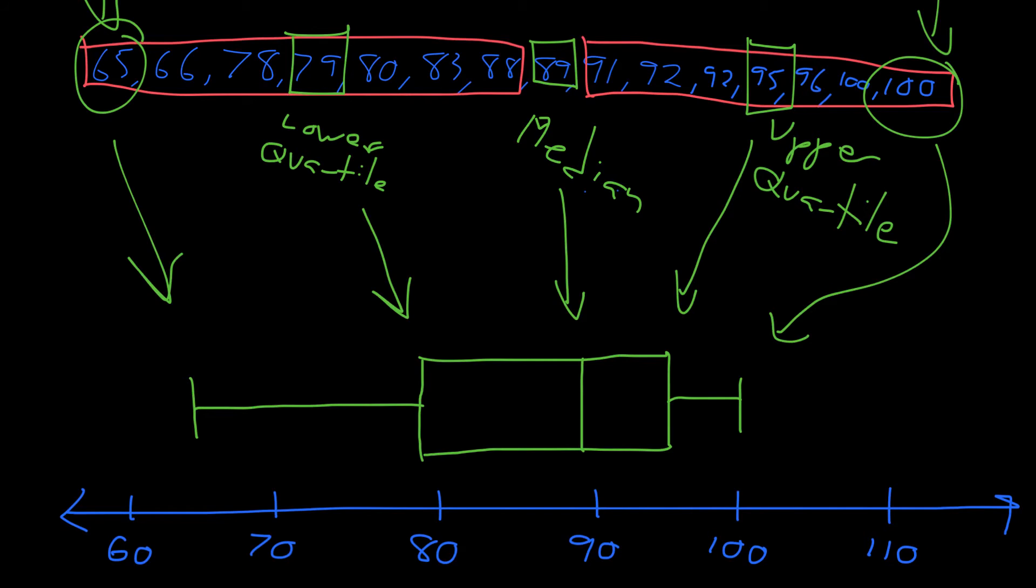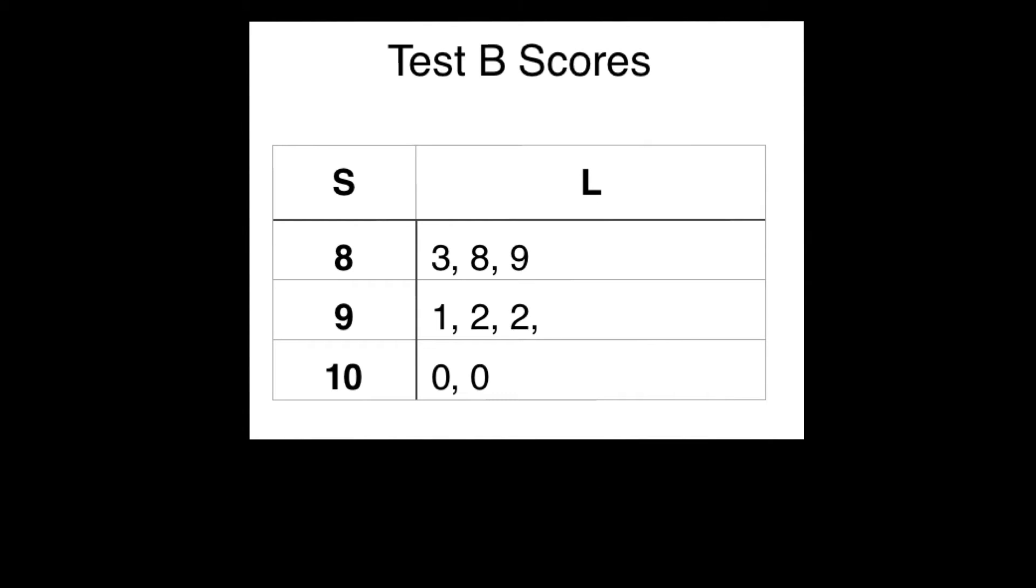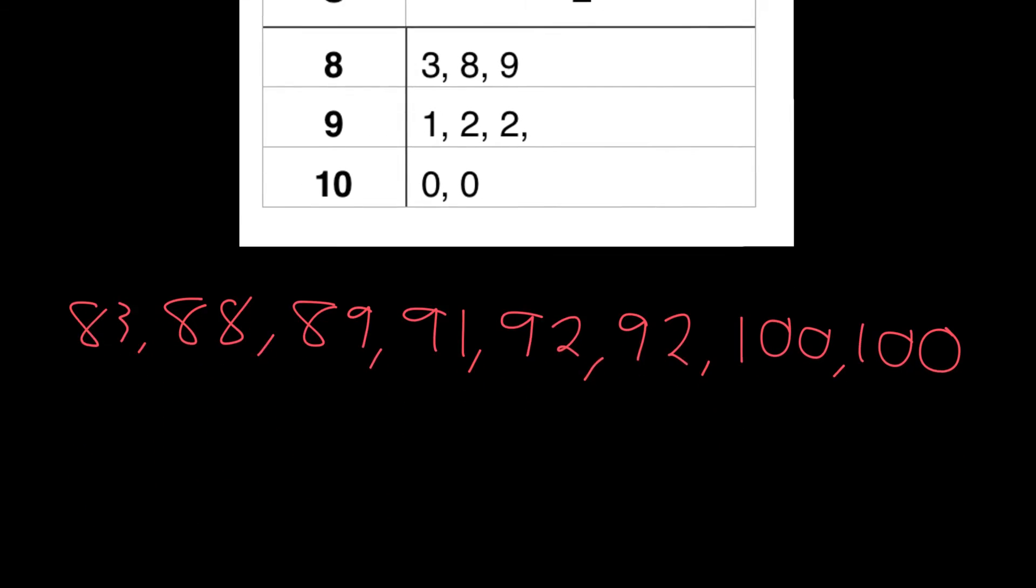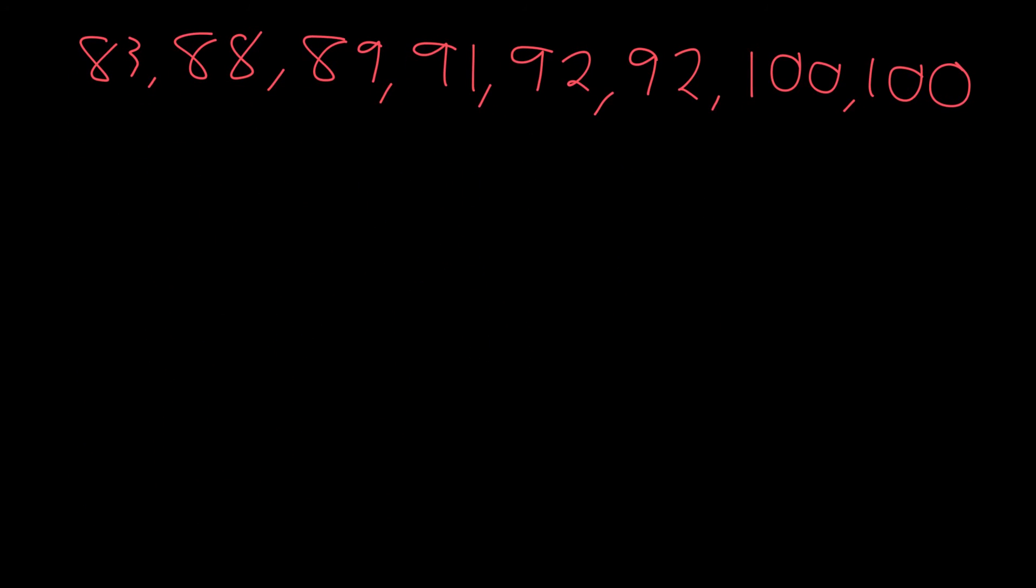Let's do one more example. Here we have, this is going to be a quicker example. So we have another stem and leaf plot. So our numbers for this guy are, we have 83, 88, 89, 91, 92, 92, 100, and 100. All right, now we don't really need this anymore. We're just going to use these numbers.